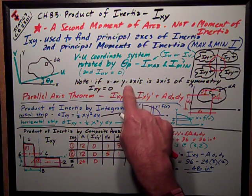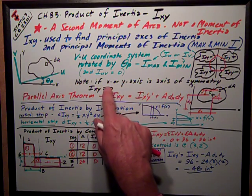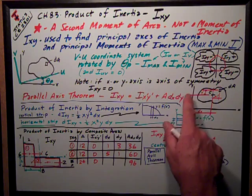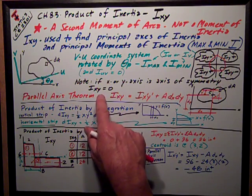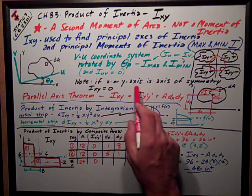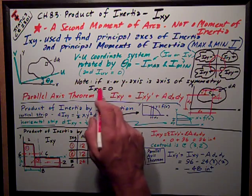The other interesting thing that we're going to use that helps us solve problems is, if the X or the Y axis is an axis of symmetry, then IXY, the product of inertia, is equal to zero. So if either one of those axes is an axis of symmetry, the product of inertia is zero.